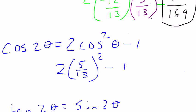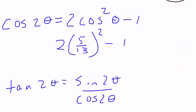Well, 5 thirteenths squared would be 2 over 1 times 25 over 169 minus 1. But we're going to need a common denominator. So I'm going to make it 169 over 169.